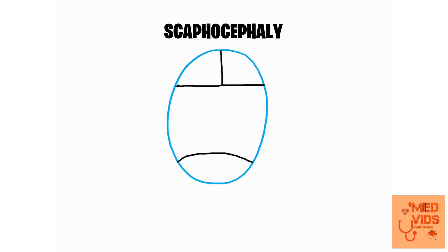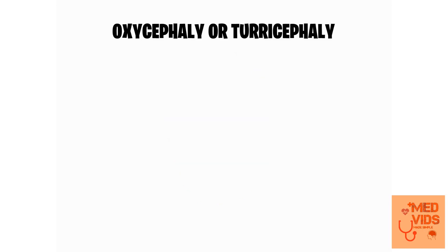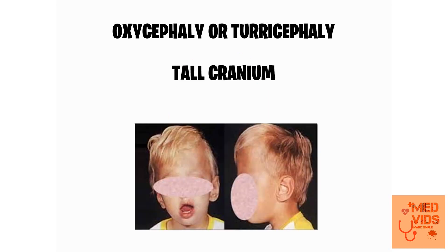Then we have scaphocephaly, in which the sagittal suture fuses early. Oxycephaly or turricephaly means tall cranium — as you can see in the picture, the cranium of the child is very tall. This happens in many craniosynostosis conditions. Try to remember: turricephaly means tall cranium.